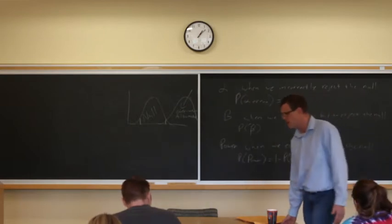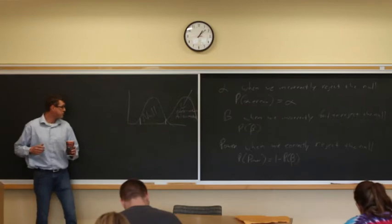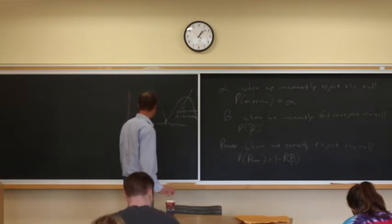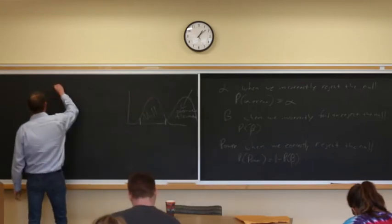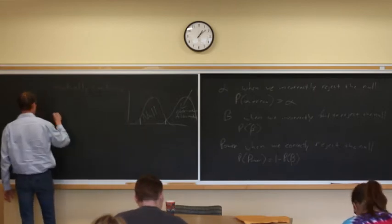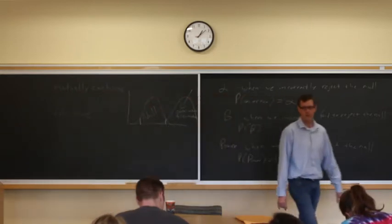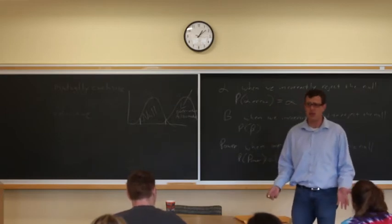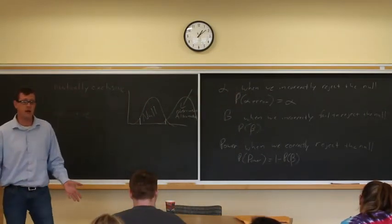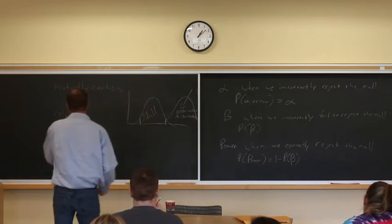If you think about probabilities - one of the things I talk about in the readings but didn't discuss so much in class - the maximum probability you can ever observe is one. There's a hundred percent chance of something happening, the probability is one. Now there are different things that can happen, and we can talk about those things in terms of whether they are mutually exclusive and whether or not they're exhaustive.